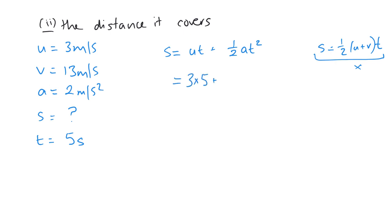So 3 times 5 plus a half times 2 times 5 squared. That's 25, so we have 15 plus 25, which is 40. And S is distance, so that's in meters.